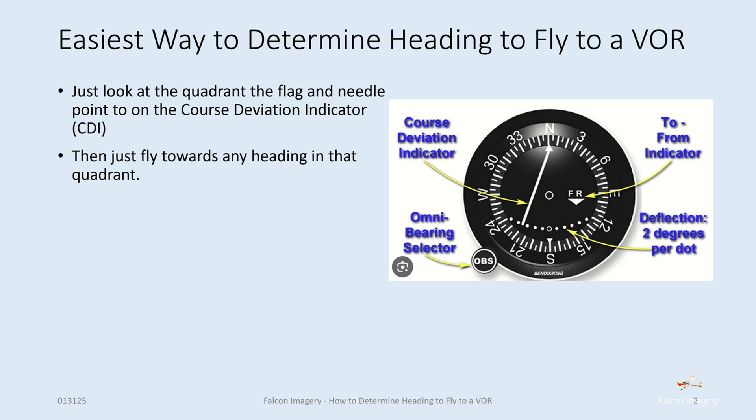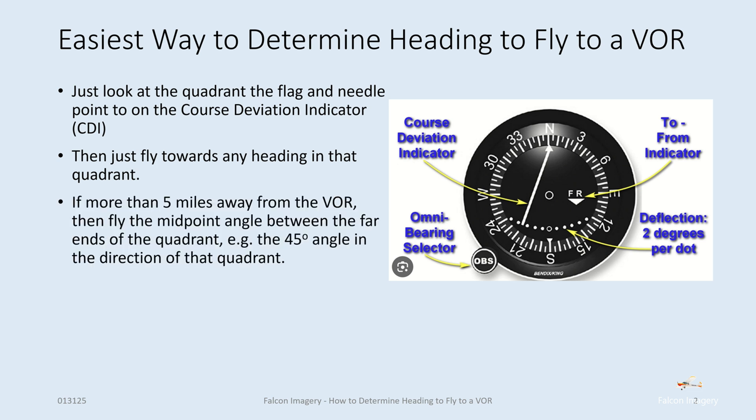Just fly towards any heading in that particular quadrant that the flag and needle point to. If more than five miles away from the VOR, then fly the midpoint angle between the far ends of the quadrant — for example, the 45-degree angle in the direction of that particular quadrant that you've determined you need to fly towards.